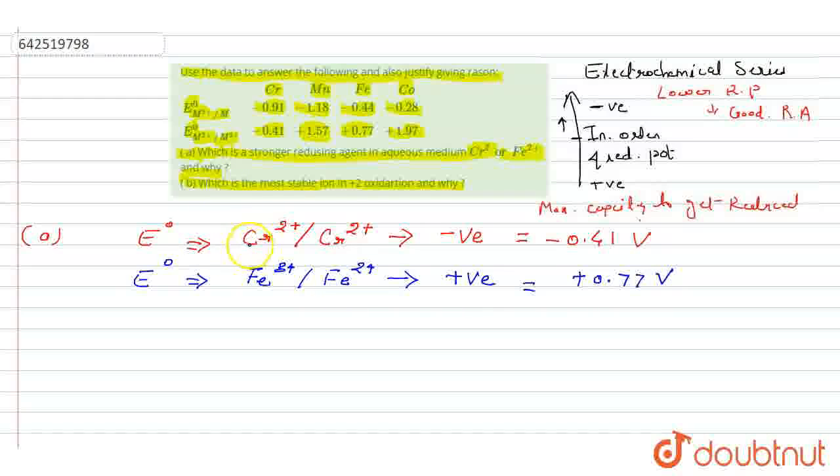In this case, chromium is the stronger reducing agent. Hence, Cr²⁺ is a stronger reducing agent than Fe²⁺.